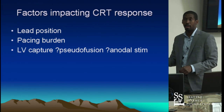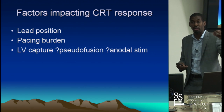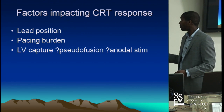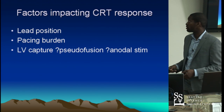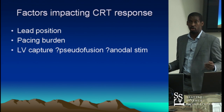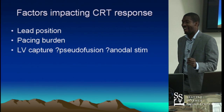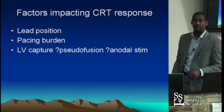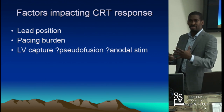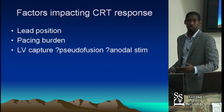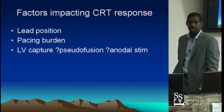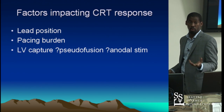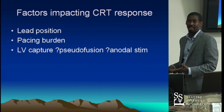A little bit of fusion is actually a good thing — one company now has a proprietary algorithm to optimize fusion between the native and LV paced QRS. Anodal stimulation is important, particularly in the era of unipolar leads. Cleveland Clinic reports it happens 9–10% of the time where stimulation occurs at the anode rather than the cathode — so if you pace tip to coil and the coil starts to capture in the right ventricle, you're pacing the RV and not the LV, and those patients don't respond.